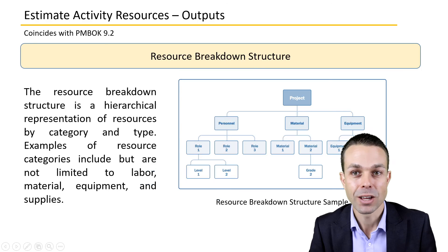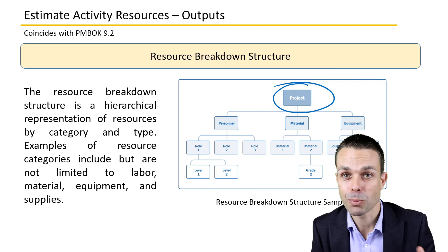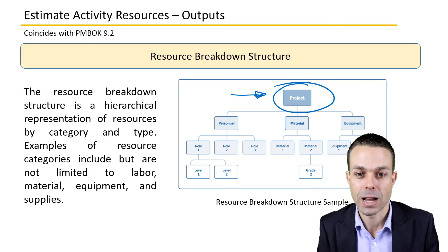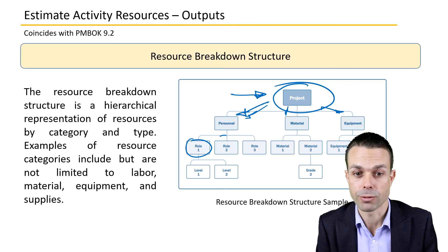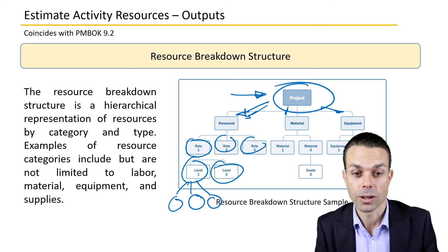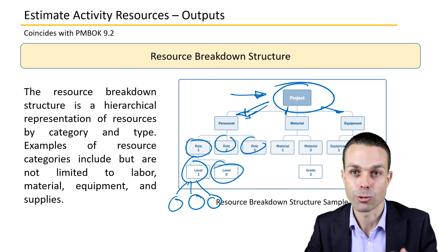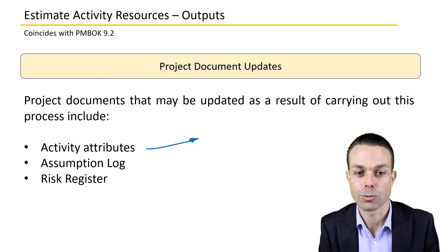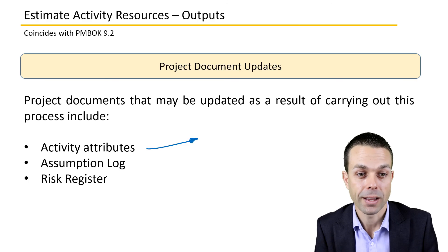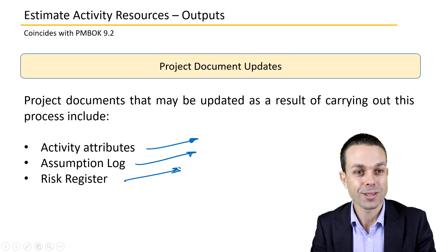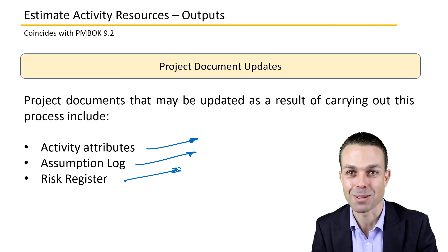The resource breakdown structure is also an output, similar to a work breakdown structure but decomposing resources — breaking down personnel and materials or equipment into roles and sub-roles. For example, a team leader may have a team beneath them, which may have further layers, until we reach the final layer of required resources. Project document updates include the activity attributes, the assumptions log, and any risk register updates. Those are all the details for estimating activity resources as part of the PMBOK.